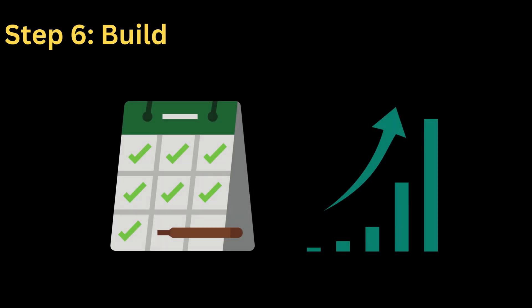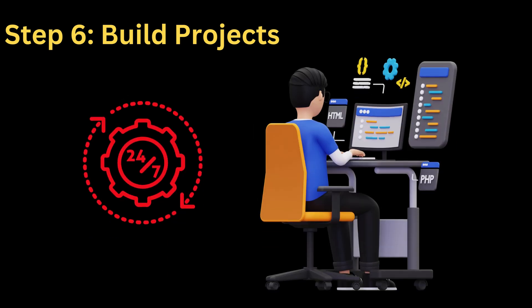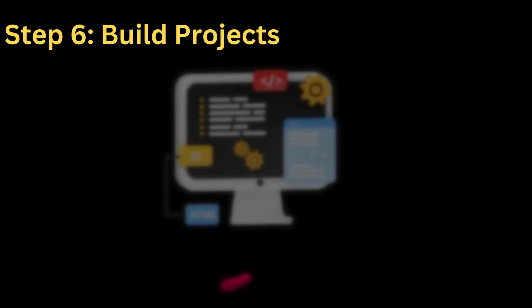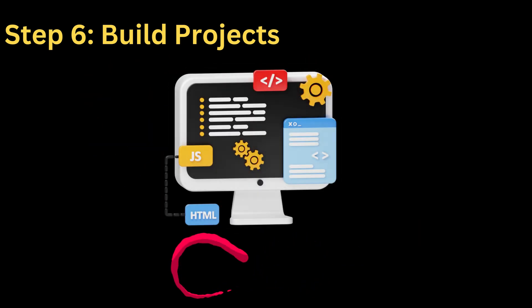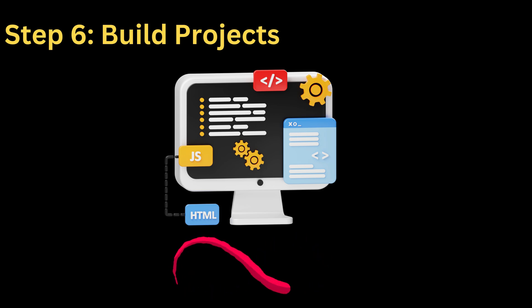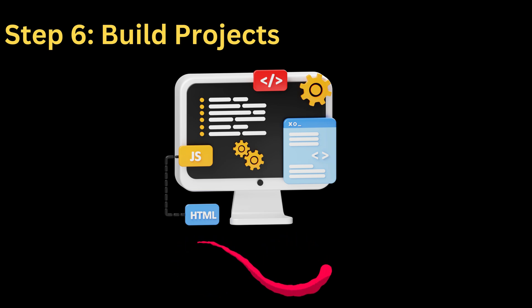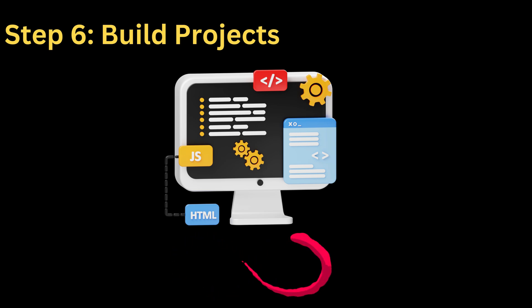If you have consistently applied the guidelines until here, then you know everything in theory. However, theory does not mean anything if you don't apply it in your programs. You need to build projects constantly to practice — even after you are an expert, because computer science is an everlasting learning journey. You can never say that you are done with it. Also, try to learn from other areas if you are interested. For example, if you are a back-end developer, you can also try to learn the basics of front-end development. Who knows? You may like it more than back-end development.